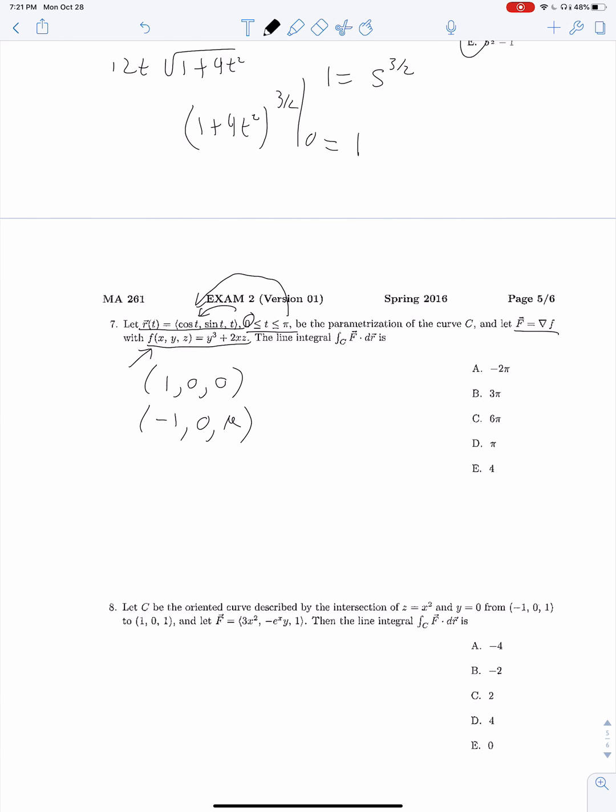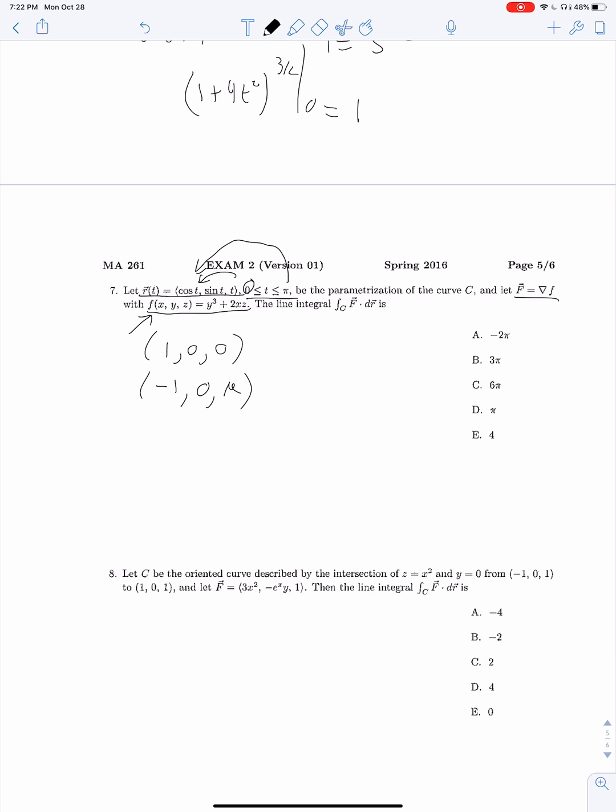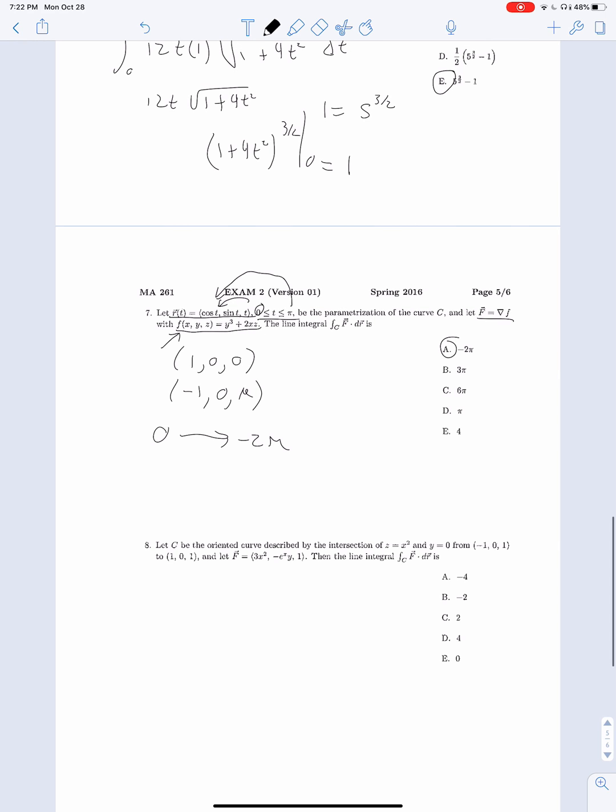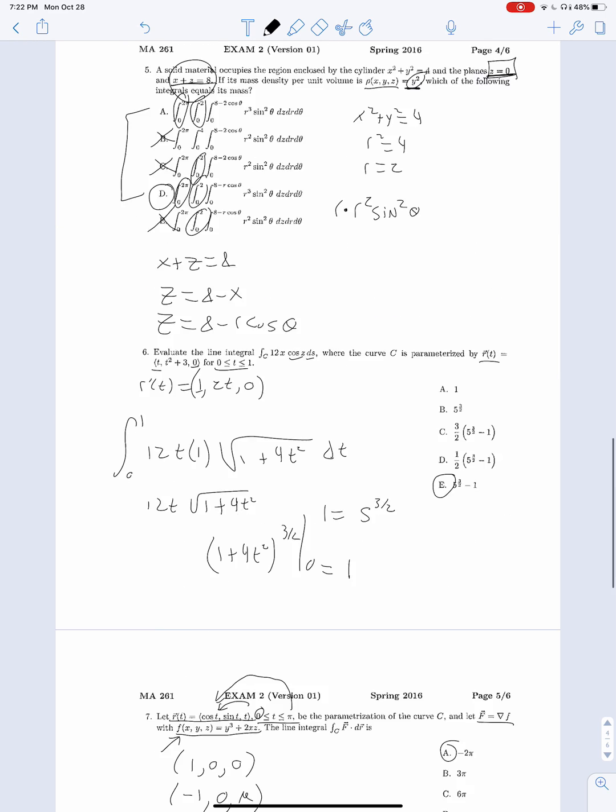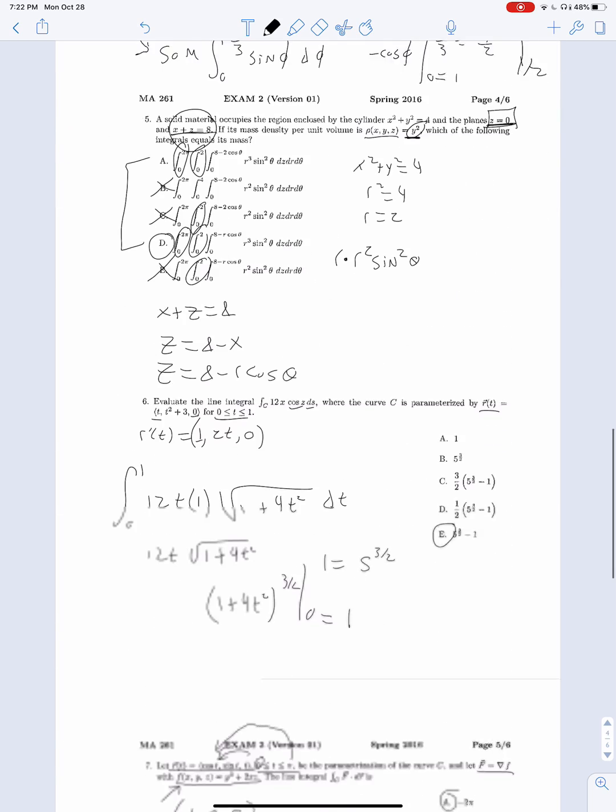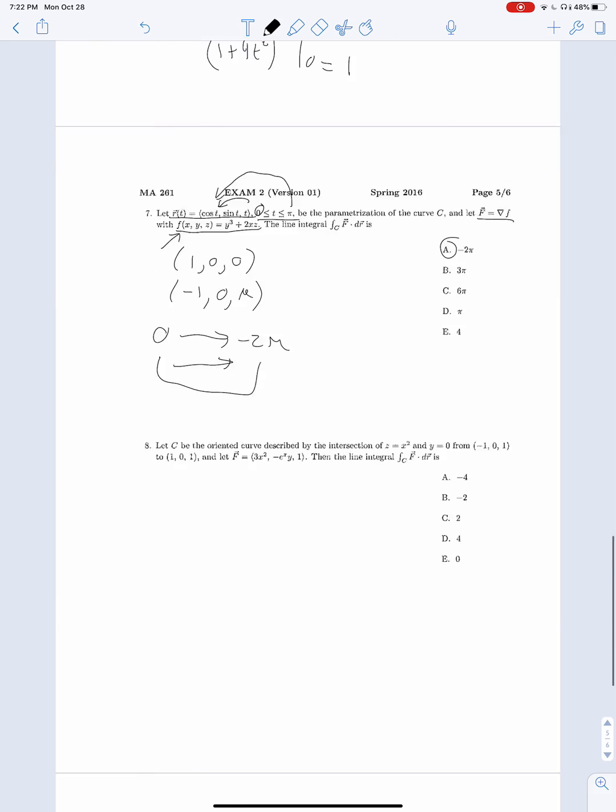We're going to take these two points and see how much our potential function changes as we go between these points. 1, 0, 0 gives us 0. Negative 1, 0, pi gives us negative 2 pi. And that's our answer, the difference between these two, or how the function had to travel to get there. And we are correct.